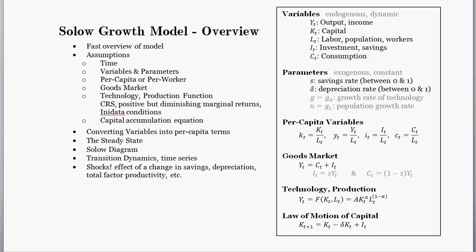The next thing to note is that it's a closed economy — there's no trade in this model; we don't bring in exports or anything like that. There's also one good in the economy, which we'll call Y, or output, or income. You can think of Y as the value of all goods and services produced, but technically there's just one good in the model. That income can either be used for investment or consumption.